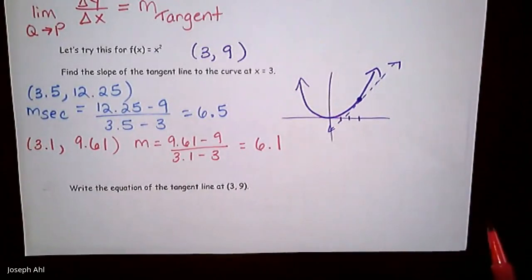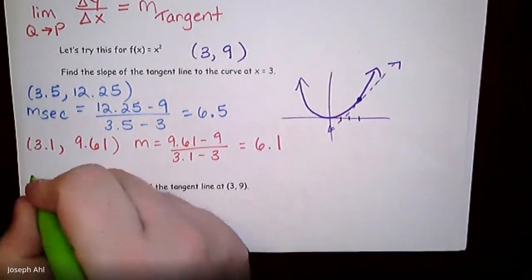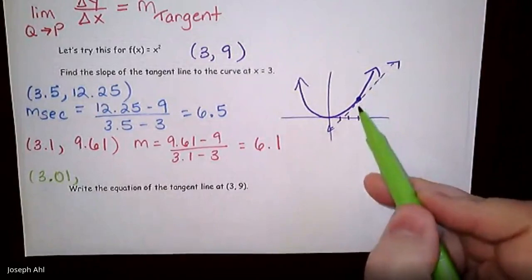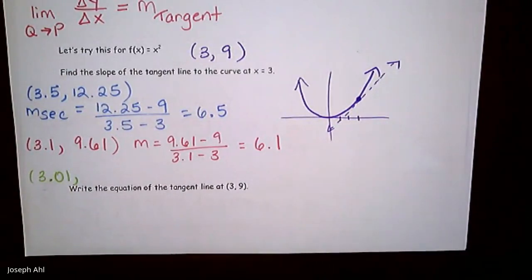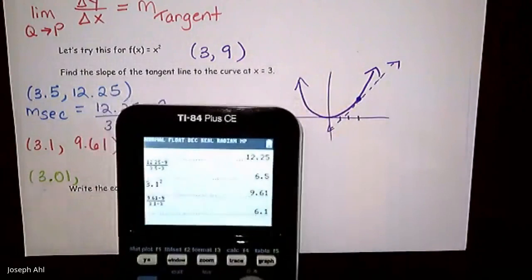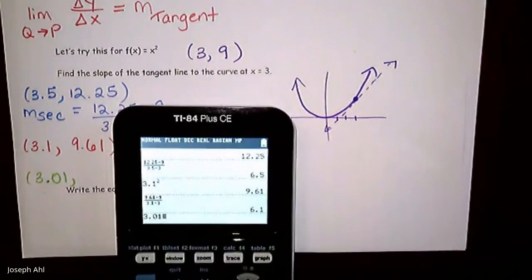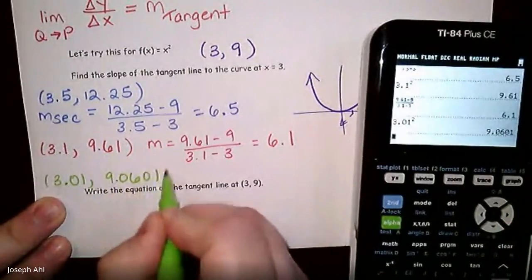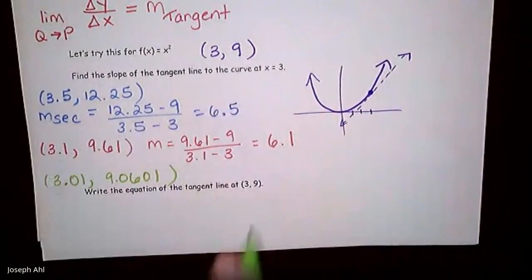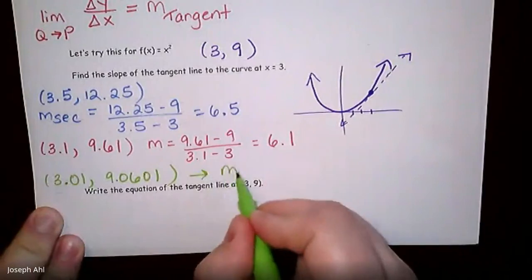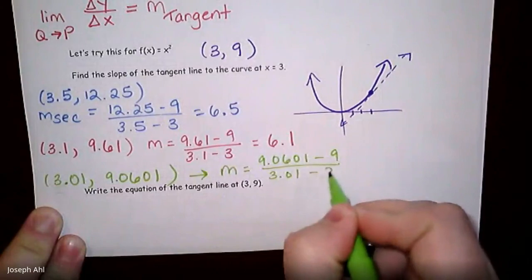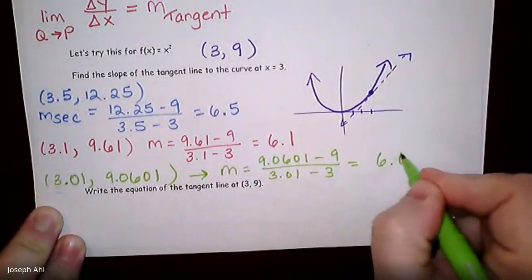So if you want to try just one more case, I mean, why don't we just get really, really close and try like 3.01. That's really, really close to x equals 3. And see if that gets us an even better approximation for the slope of my tangent line. So 3.01 squared is 9.0601. Okay. So if we go ahead and calculate the slope there, the change in y over the change in x, we won't be too surprised, I don't think, to find that now the slope is 6.01.